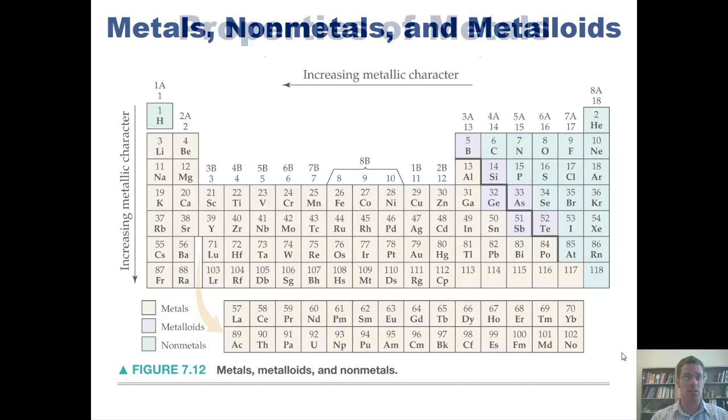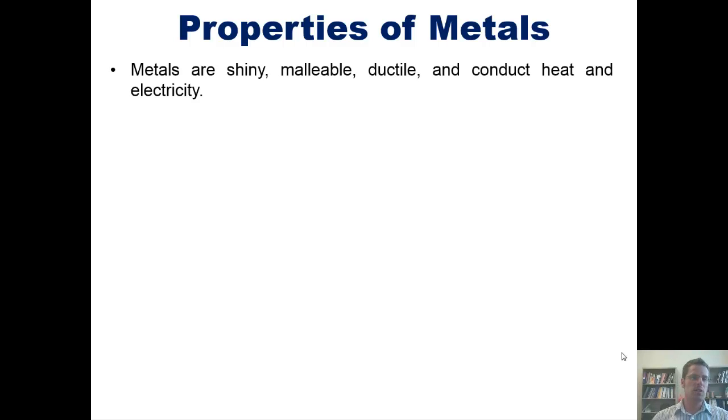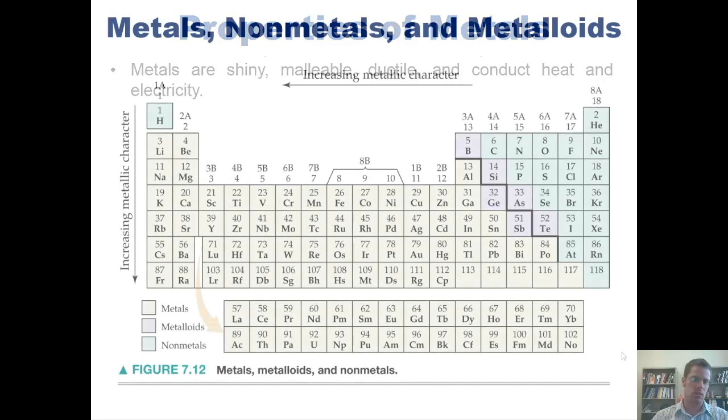I'm now going to tell you about properties of metals. Metals are shiny, malleable, which means they can be bent and then bent back without crumbling. They're ductile, which means they can be drawn into wire, and they conduct heat and electricity. Elements show increasing metallic character as you go down and to the left on the periodic table.